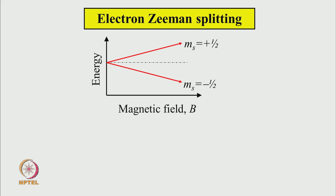The energy difference between the two states with m_s = +1/2 and m_s = -1/2 depends on the strength of the magnetic field. If the field strength is small the splitting will be small; if large, the splitting will be large. The splitting changes linearly with the magnetic field.